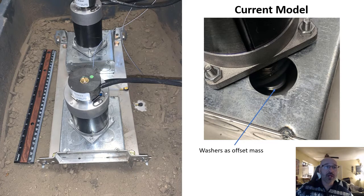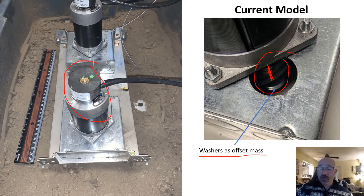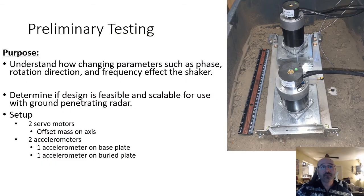Looking at the design, we had two high-end servo motors with an offset mass on the bottom inside the box. We used washers as our offset mass, with a little arm coming out to the washers — that's how we did our offset mass on these two servo motors. These are very high-end servo motors with encoders, giving us very precise feedback control of the speed of each motor. We could sync them up very precisely with a whole motor controller system.